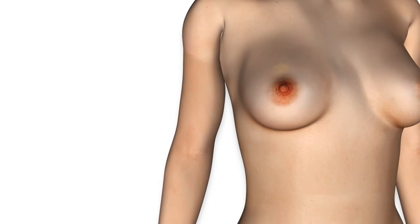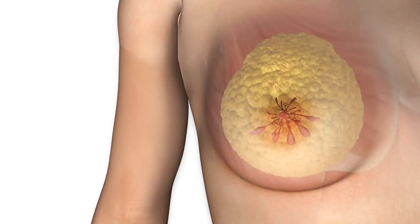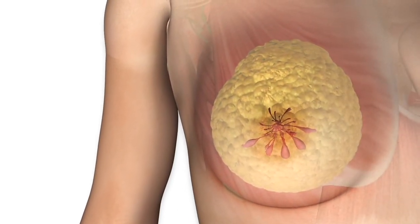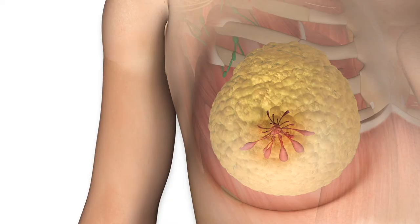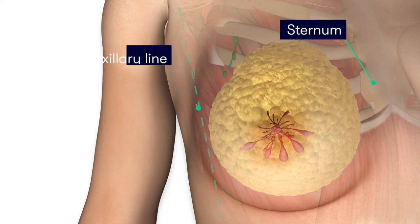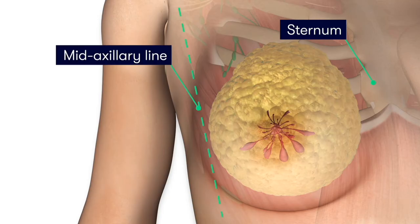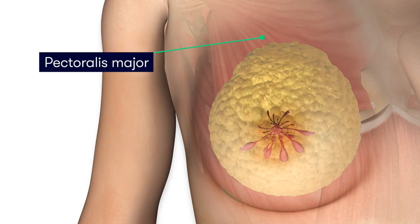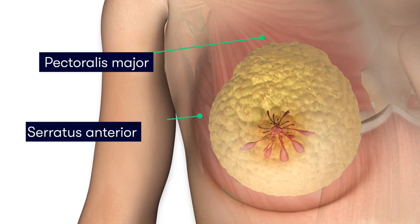The breast itself lies between the second and sixth rib anteriorly, and it extends from the edge of the sternum to the mid-axillary line. With regards to the underlying muscles, the breast tissue lies upon the pectoralis major and the serratus anterior on its lateral aspect.